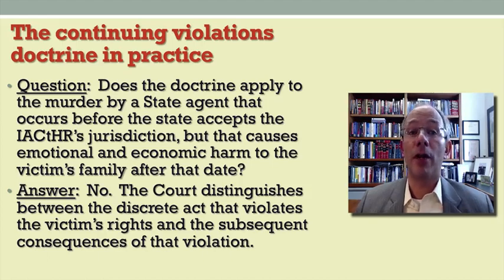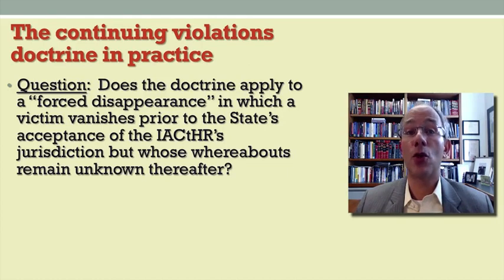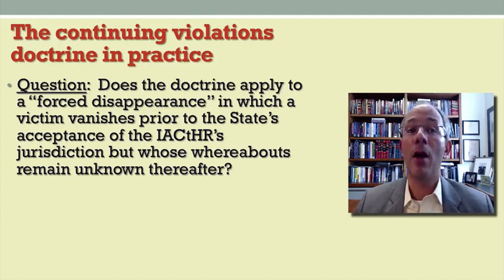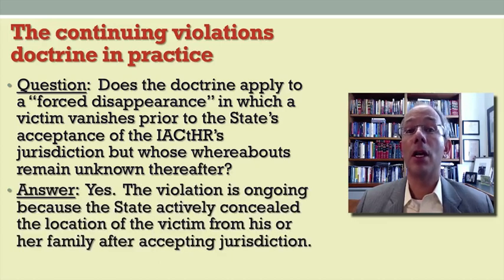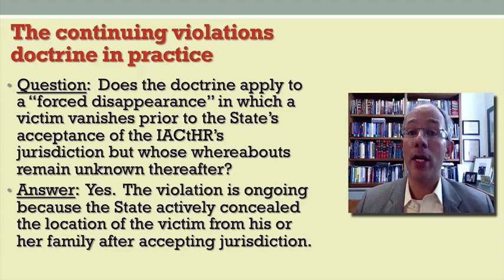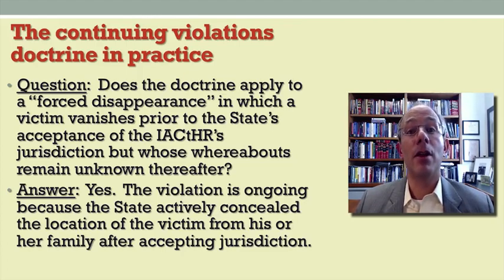Let's consider a slightly different example. The example concerns a so-called forced disappearance, in which a victim — often a political opponent or dissident of a regime in power — vanishes prior to the state's acceptance of the court's jurisdiction, but whose whereabouts remain unknown and undisclosed thereafter. Here the Inter-American Court has reached a different result, saying that the continuing violations doctrine does apply and thus that the court does have jurisdiction, because the violation is ongoing. The ongoing nature of the violation is the state's continuing to conceal the location of the victim or its refusal to investigate his or her fate after the state has accepted the authority of the court.